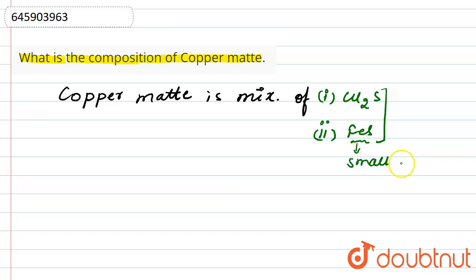This is present in small amount as impurities because copper matte is the intermediate product that is formed in the extraction of copper. So basically, in the extraction of copper, this iron sulfide will be the impurity.